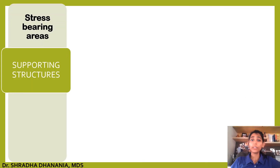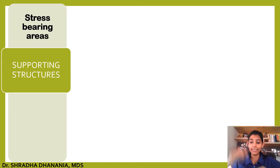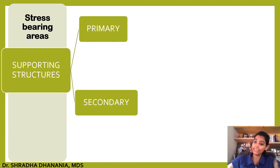What are supporting structures, or what are the stress-bearing areas? When an edentulous patient wears a complete denture and performs various functions like mastication, various forces are generated. These forces are borne by the structures underlying the denture. Based upon the stress-bearing potential of various anatomic structures, we divide them into primary and secondary. Primary is able to bear more stress; secondary bears comparatively lesser stress.